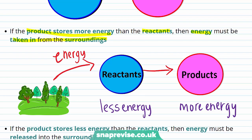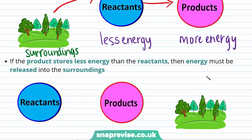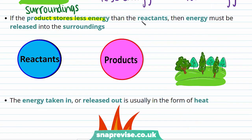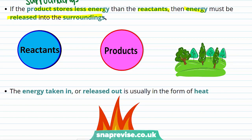And for a small reaction, it's likely to be the test tube or the air around it. However, for a big reaction, it could be a forest, as we've used to represent the surroundings here. The other possibility is that the product stores less energy than the reactants. And in this case, this extra energy is released back into the surroundings.